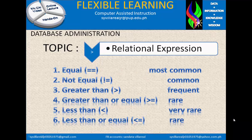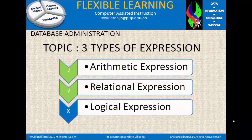As a review: the equal sign is considered the most common and can be used in computer programming or databases. Not equal is common. Greater than is frequent. Greater than or equal is rare. Less than is very rare. And less than or equal is rare. We are now finished with the relational expression.